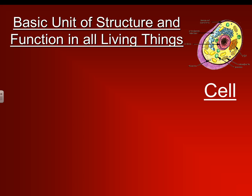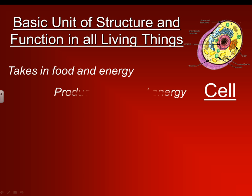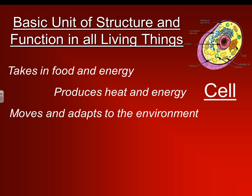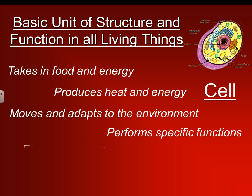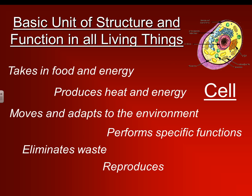The basic unit of structure and function of all living things is our cell. The cell has six main functions: first is to take in food and energy; it also produces heat and energy; moves and adapts to the environment; performs specific functions depending on where the cell is located; it also eliminates waste; and reproduces. These are the six things that our cells do on a daily basis.